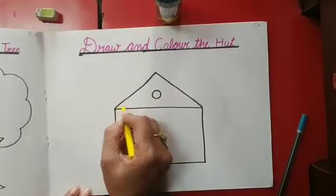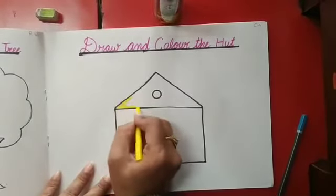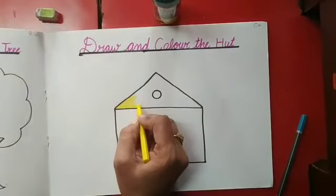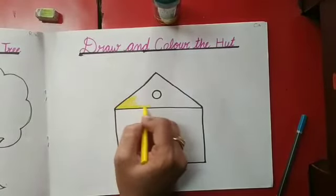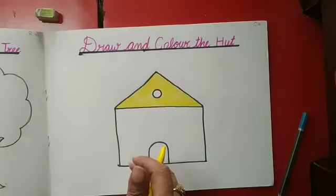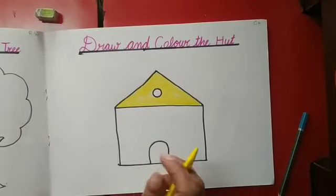So in the triangle, I will fill the yellow color. Slowly, slowly. You have to fill the color. Like this. Kids, ma'am ne kya kiya? Ma'am ne yellow color fill kar diya.